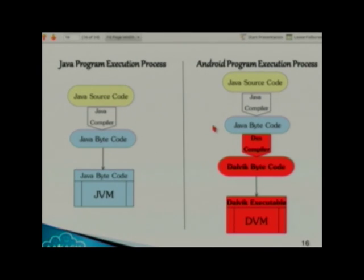On the right-hand side — what happens on the Android side: we have Java source code, a Java compiler, and we get Java bytecode. Then the Dex compiler comes into the picture, which again compiles the Java bytecode into Dalvik bytecode, and this Dalvik bytecode runs on the Dalvik virtual machine.